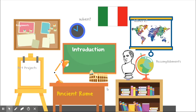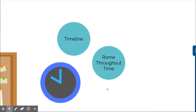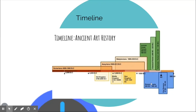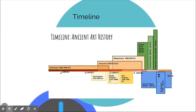Now let's talk about when this was. Looking at our timeline — I've added to the one from other lessons — you can see the Roman Empire is around here, roughly 700 BC to 500 AD, which is when the Roman Empire existed and expanded.